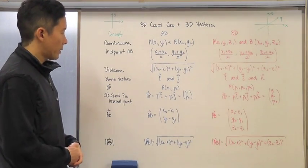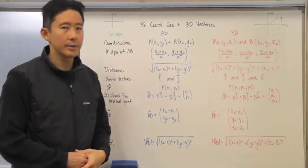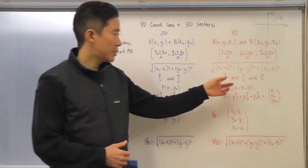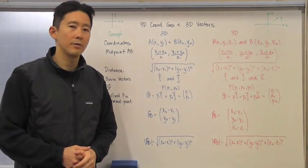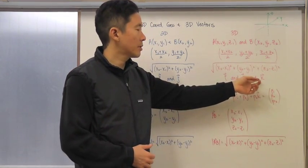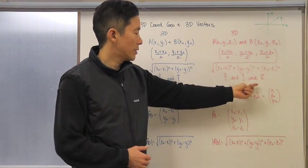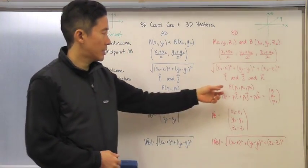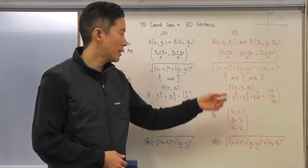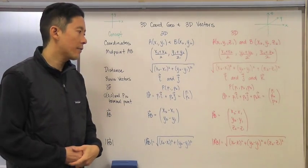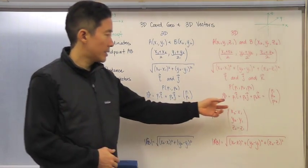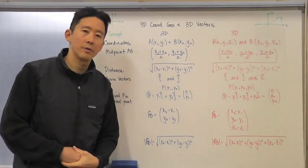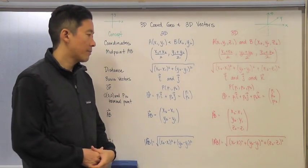With the basis vectors, there is one addition: the k basis vector. Like i and j, k has a magnitude of one and points in the positive direction of its associated axis, which is the z-axis. If P has components p₁, p₂, and p₃, and the vector is in standard position, it is written as p₁i + p₂j + p₃k, which can also be written as (p₁, p₂, p₃).